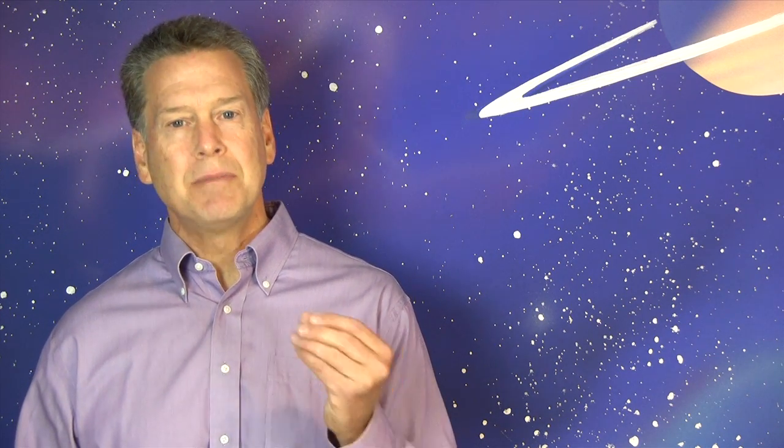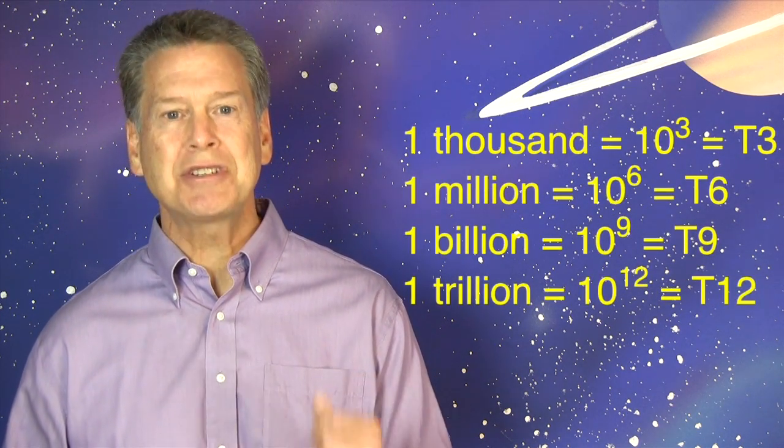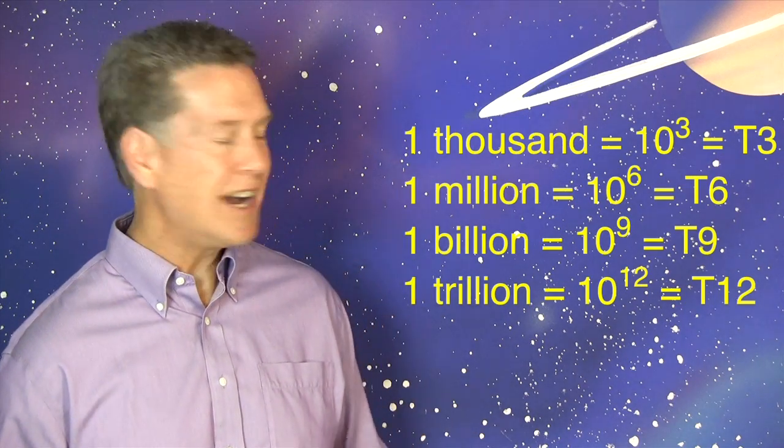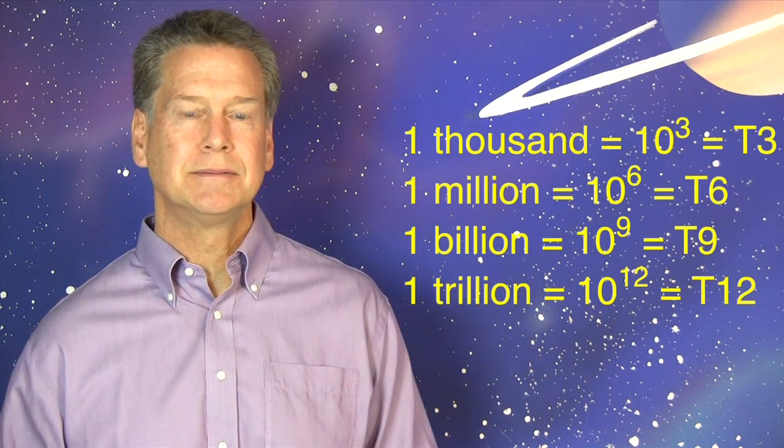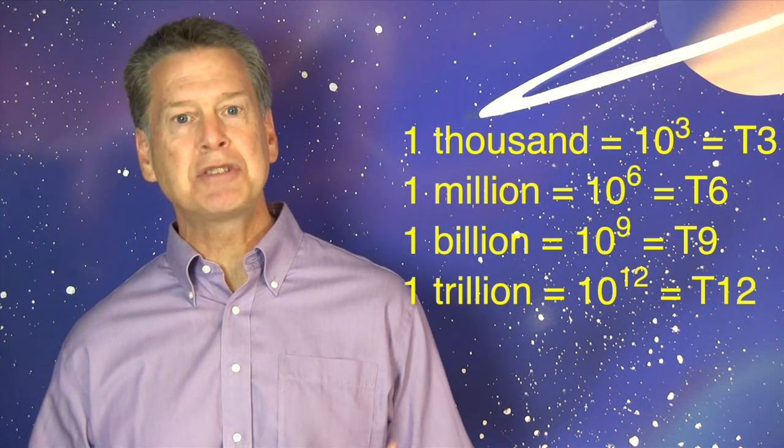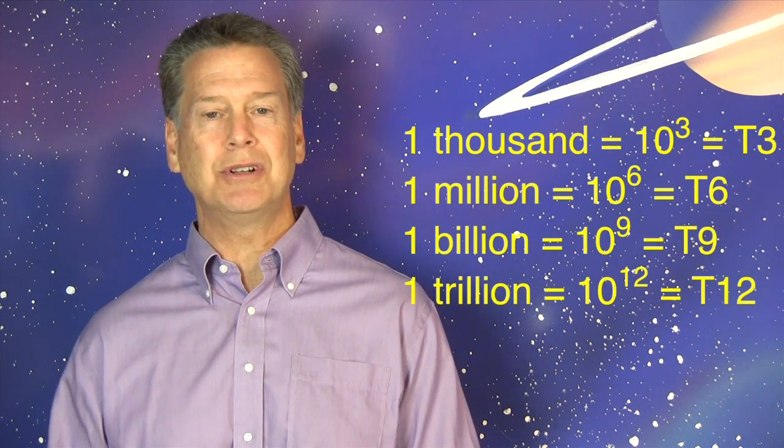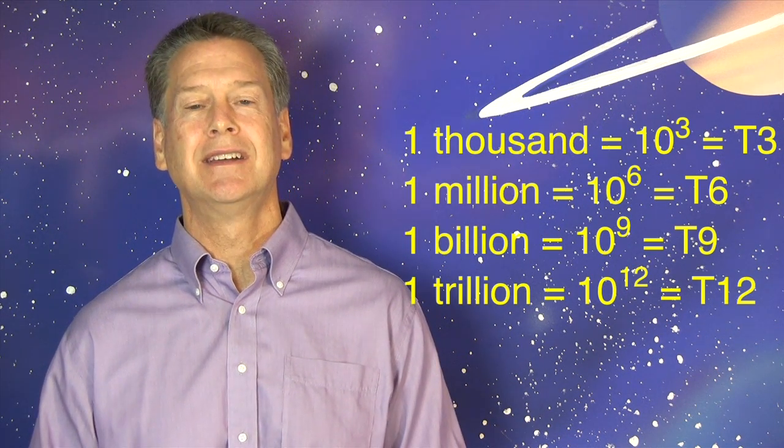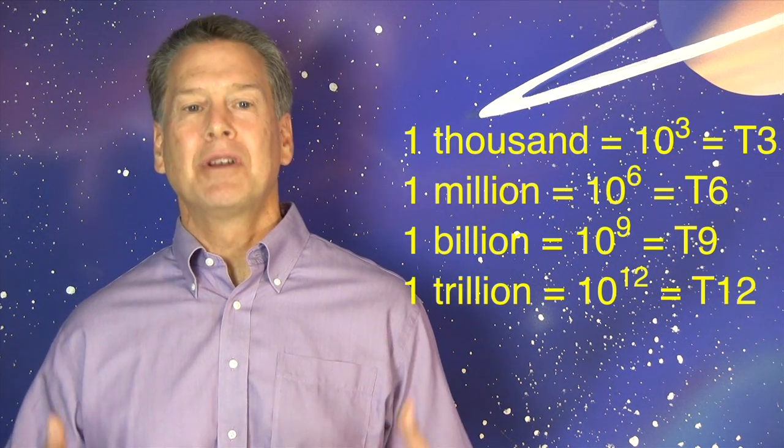Have you made your estimate of the average high school population? Remember, it's multiple choice. You must choose from T3, T6, T9, and T12. Even if you happen to know the precise average population of an American high school, you still need to round off to the nearest triple power of ten. Alright, what's your answer?